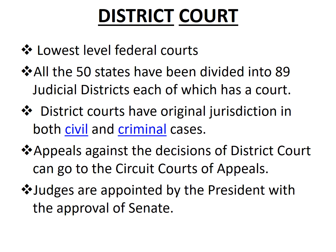The District Court is the lowest level federal court. All 50 states which comprise the United States of America have been divided into judicial districts, and each district has a court. These courts address both civil and criminal cases. They have original jurisdiction, which means citizens can directly approach these courts in civil or criminal matters. Appeals against their decisions go to the intermediate level — the Circuit Court of Appeals. The judges of the District Court are appointed by the President with the approval of the Senate.